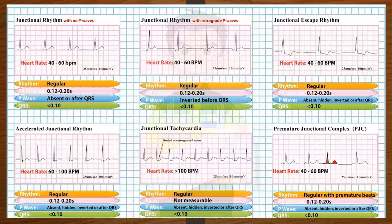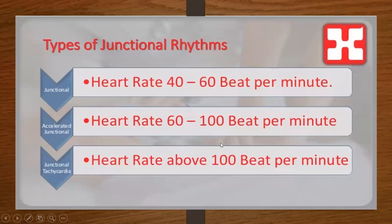Here we have an illustration of the different junctional rhythms and their characteristics. Your junctional rhythm itself is going to have a rate between 40 and 60 beats per minute. If it's an accelerated junctional rhythm, it will have a rate of 60 to 100 beats per minute. And if it's junctional tachycardia, it'll have a heart rate above 100 beats per minute.